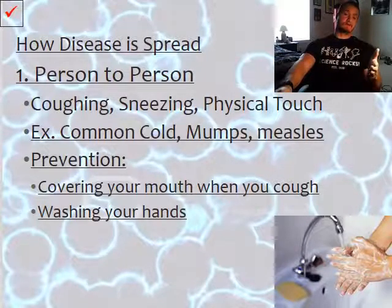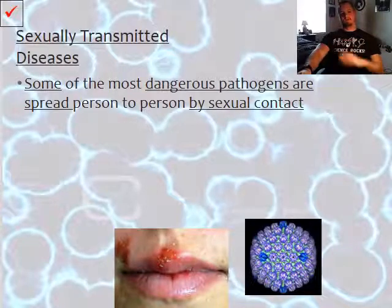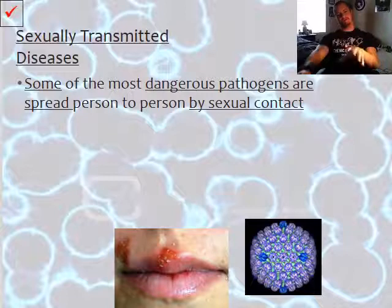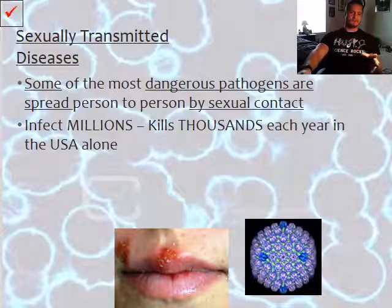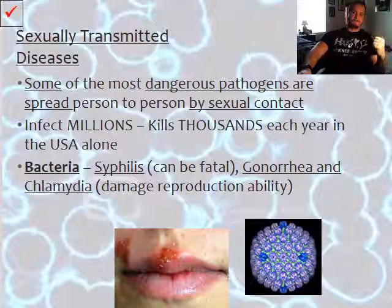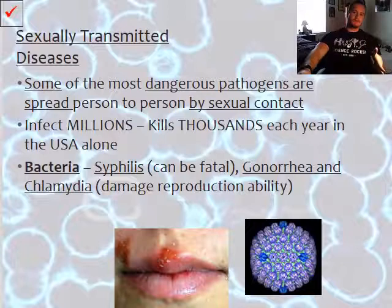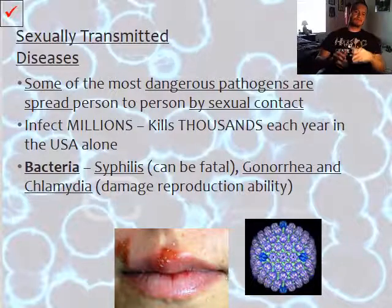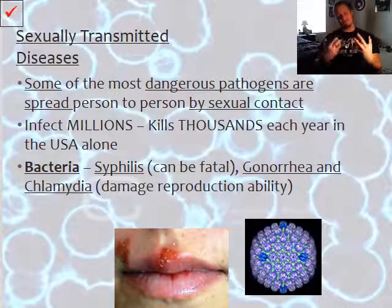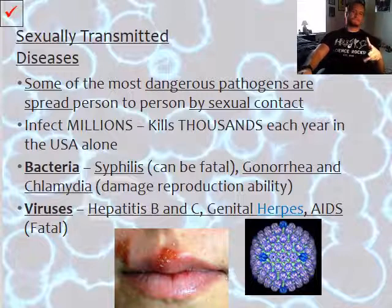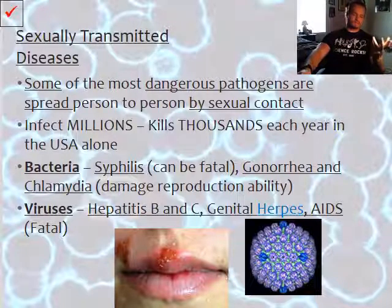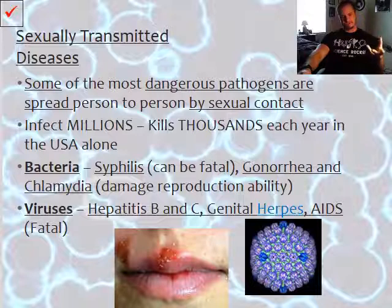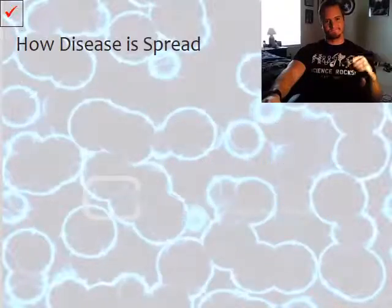STDs — sexually transmitted diseases — are also spread person to person. Some of the most dangerous pathogens are spread by sexual contact, infecting millions and killing thousands each year in the USA alone. Bacteria can cause syphilis, which can be fatal if untreated, as well as gonorrhea and chlamydia, which damage the reproductive tract. Viruses spread this way include hepatitis B and C, genital herpes, and AIDS, which can be extremely fatal. Prevention: practice safe sex.